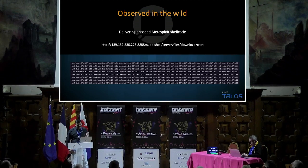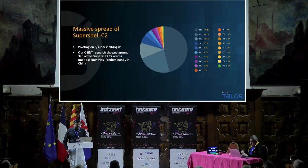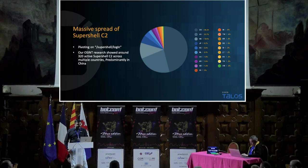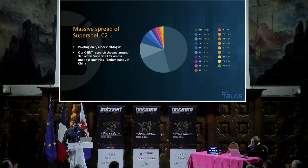While doing this research on SuperShell C2, along with the other observables we identified, we pivoted on a specific URL path as well as other indicators, which allowed us to discover that during the time of our research there were around 320 active SuperShell C2s across multiple geographies. Predominantly, it was more in China.